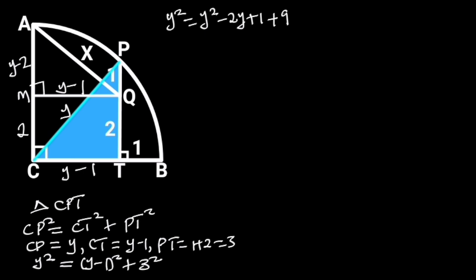Collecting like terms will give us Y squared minus Y squared plus 2Y is equal to 1 plus 9. Y squared minus Y squared is 0, and 1 plus 9 is equal to 10. So we are left with 2Y is equal to 10. Dividing through by 2 will give us Y is equal to 5.